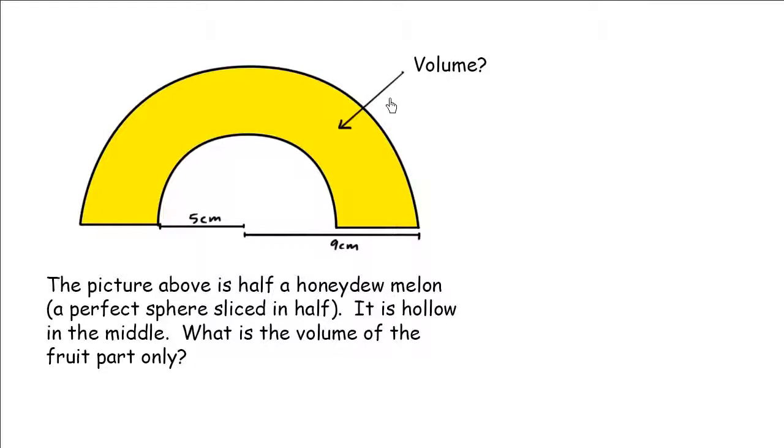Let's try a tricky volume problem involving subtracting. The picture above is half a honeydew melon, a perfect sphere sliced in half. Imagine you're eating some honeydew and you just cut it right in half, Fruit Ninja style. It is hollow in the middle - usually there's seeds here, you clean it out - and this is just half the honeydew melon.